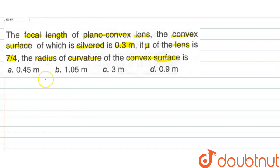So, how does our plano-convex lens look? The plano-convex lens will be like this. This is our plane surface and the other surface is our convex surface which is silvered. How can we represent this system?